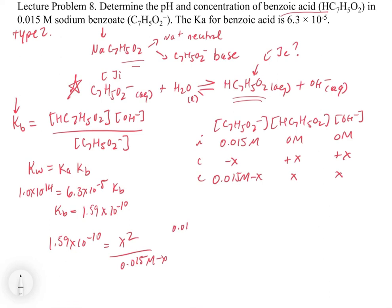We do our check: is 0.015 divided by 1.59 times 10 to the minus 10 greater than 100? It most certainly is. So we eliminate the x and solve. We get x equals 1.56 times 10 to the minus 6.